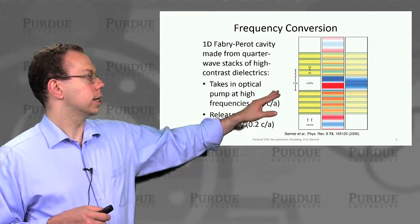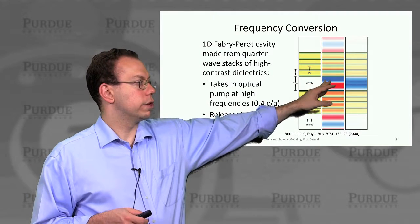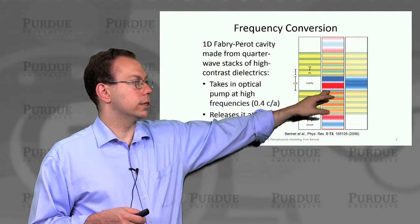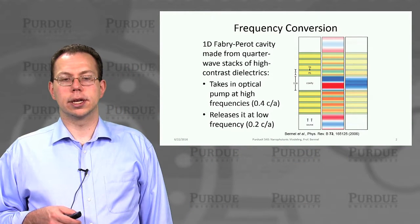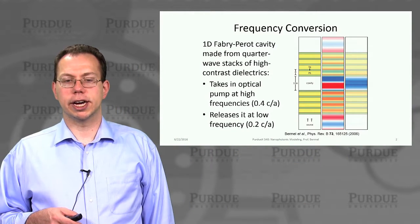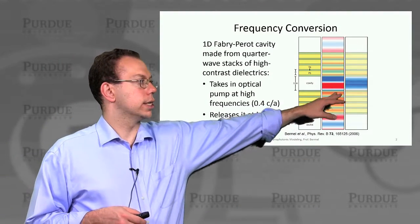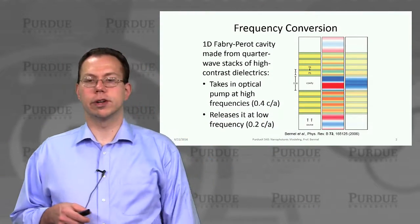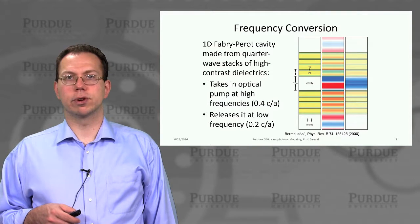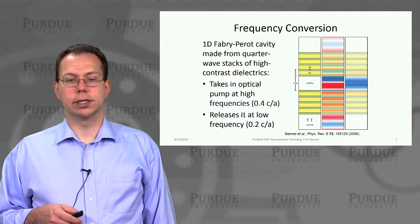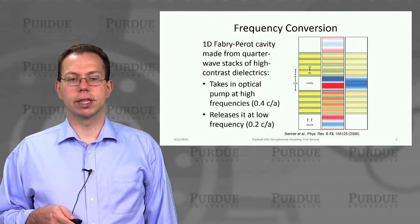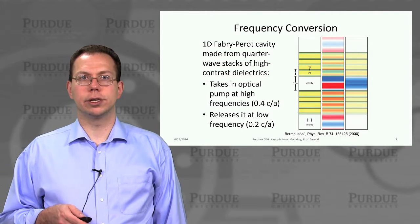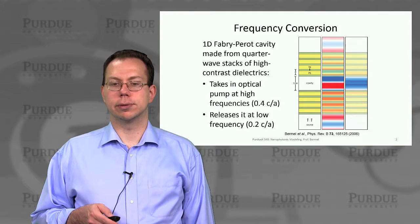In any case, you can see the field profile for the input looks like this — it's alternating. It's only a 1D simulation, so the frequency is reflected in the k-vector as well. When you go to the lower frequency output, the k-vector is half of what it was, so you can see it's varying much slower inside the cavity. The cavity is doubly resonant, so it supports both 0.4 and 0.2 modes — that's why that choice was made.